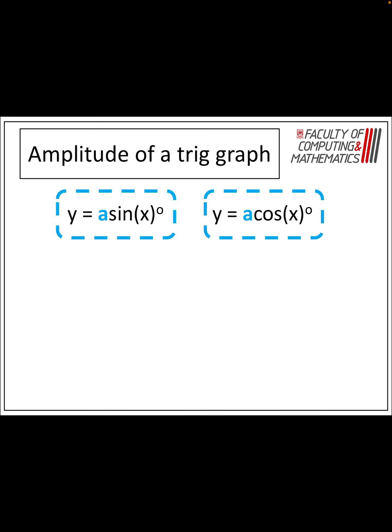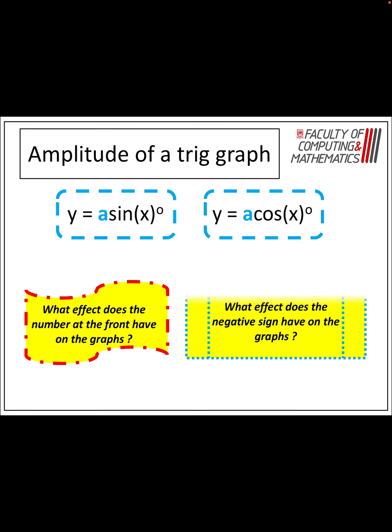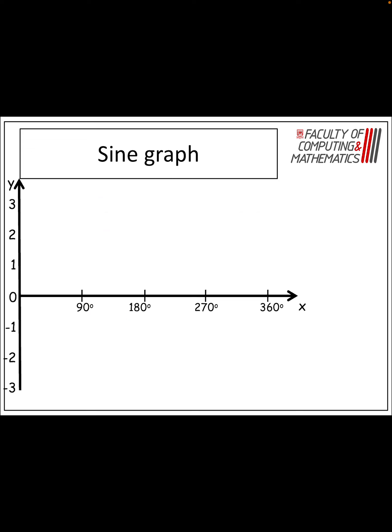So let's have a look at the amplitude — we can increase our amplitude. The number at the front of the graph is talking about the amplitude of the graph, so what effect does it have? And what happens if we've got a negative in front? Let's have a look.